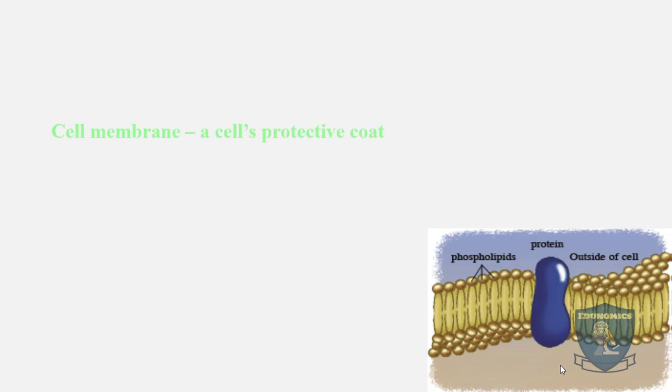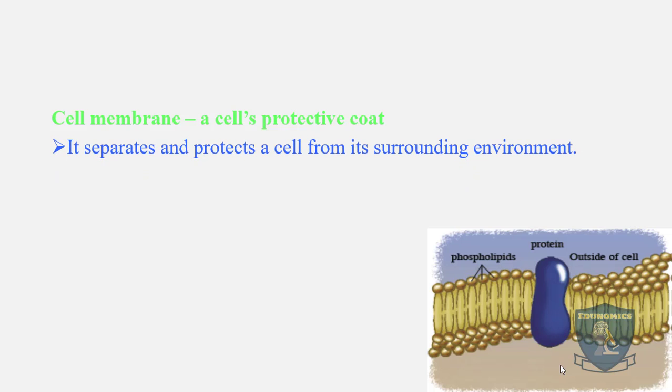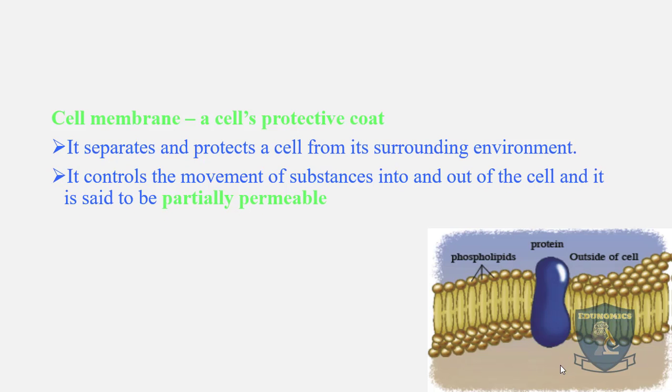The first aspect is the cell membrane, the cell's protective coat. It separates and protects the cell from its surrounding environment. The cell membrane keeps whatever is in the cell inside the cell, controls the movement of substances into and out of the cell, and it is said to be partially permeable.